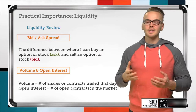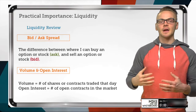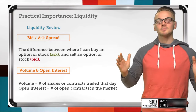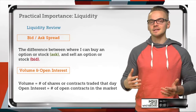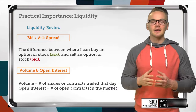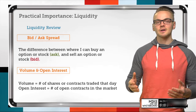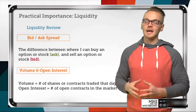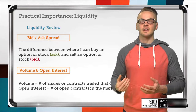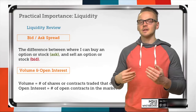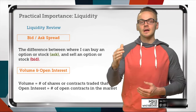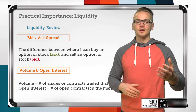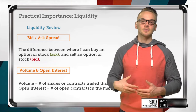The bid-ask spread is a liquidity indicator that shows us how easily we can get into and out of a market at a fair price. The more narrow the spread, the better. Wider bid-ask spreads usually indicate an illiquid marketplace. Also note that the stock market liquidity and options market liquidity for the same underlying aren't necessarily correlated — one could have a very liquid stock market but not a liquid options market, or vice versa.